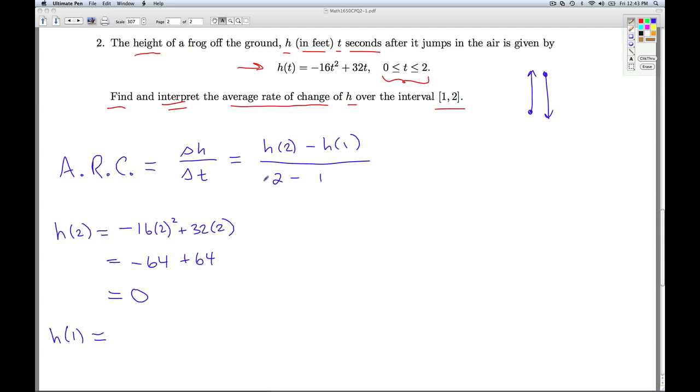What's h of 1? Let's substitute. So again, t equals 1 and simplify, and we get 16, which means that he's 16 feet off the ground at this point. All right, so that's a pretty good frog, pretty strong frog.